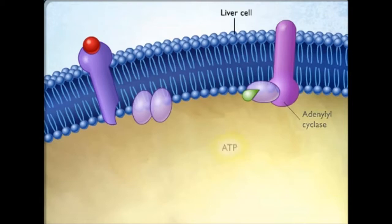When activated by the G-protein subunit, adenylyl cyclase catalyzes the formation of cAMP from ATP.